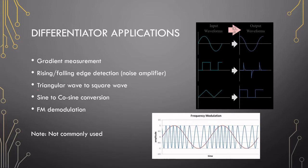You can convert triangular waves to square waves. You can do sine to cosine conversion. So if you differentiate a sine wave, you get a cosine wave.